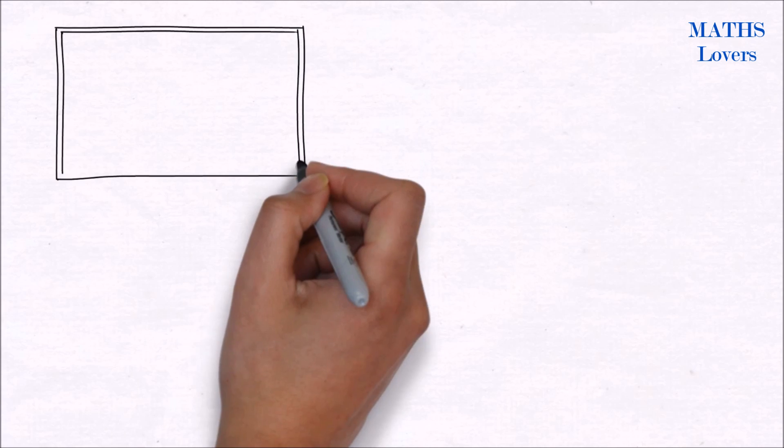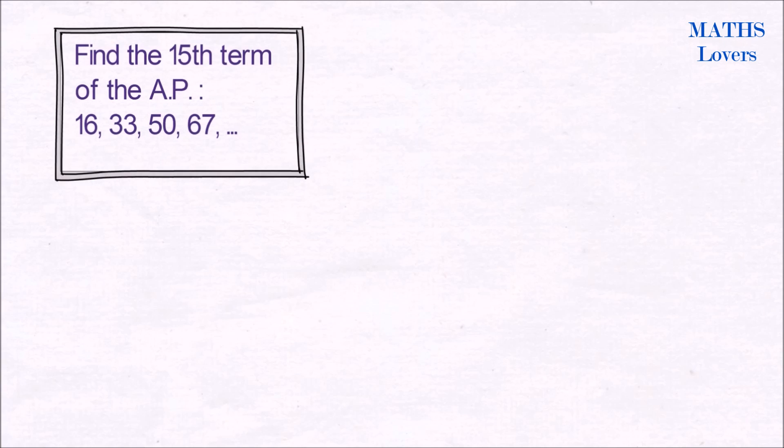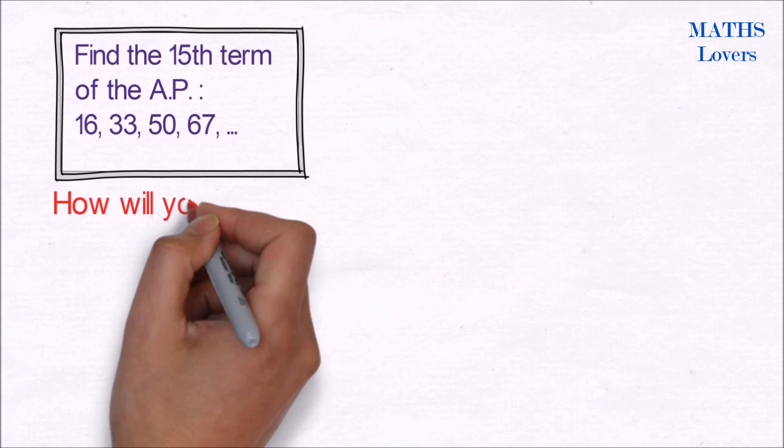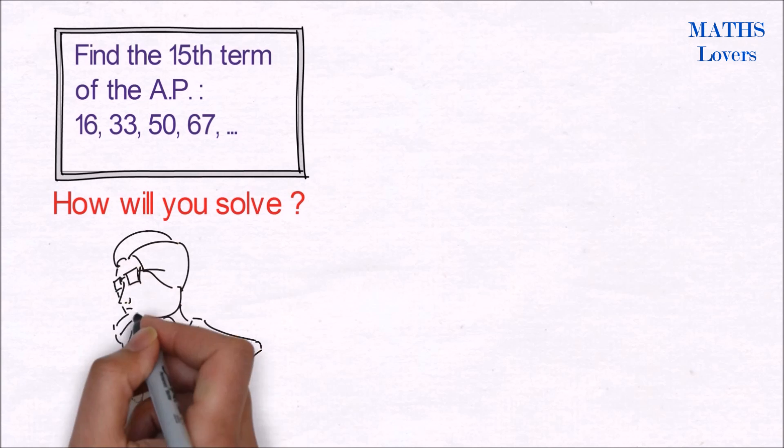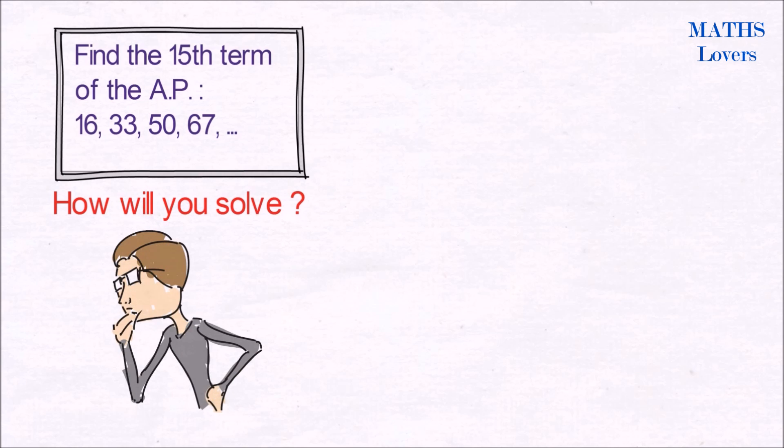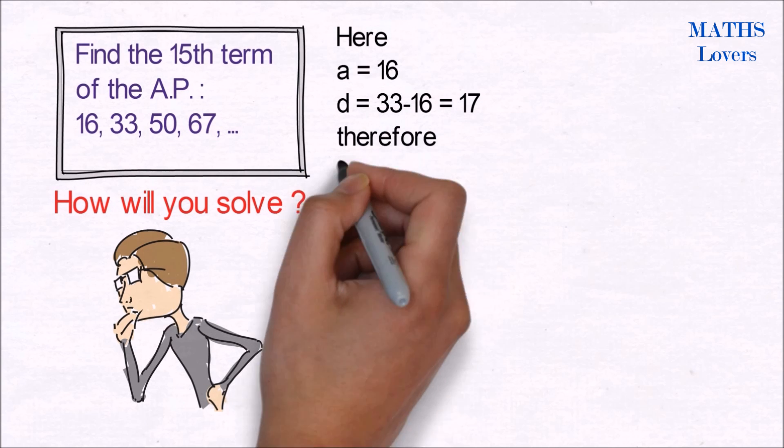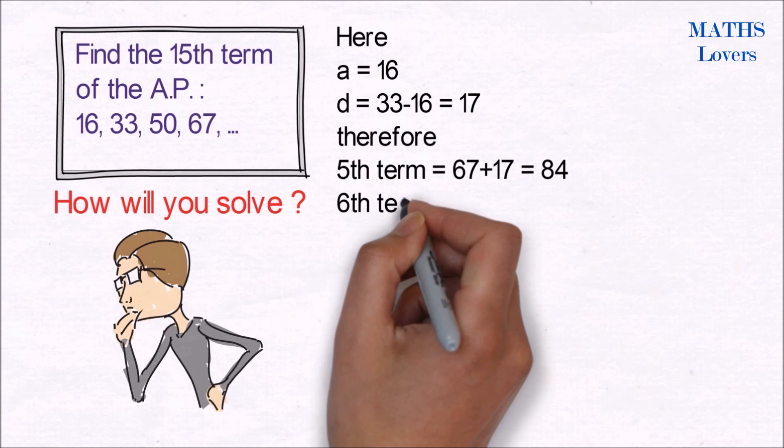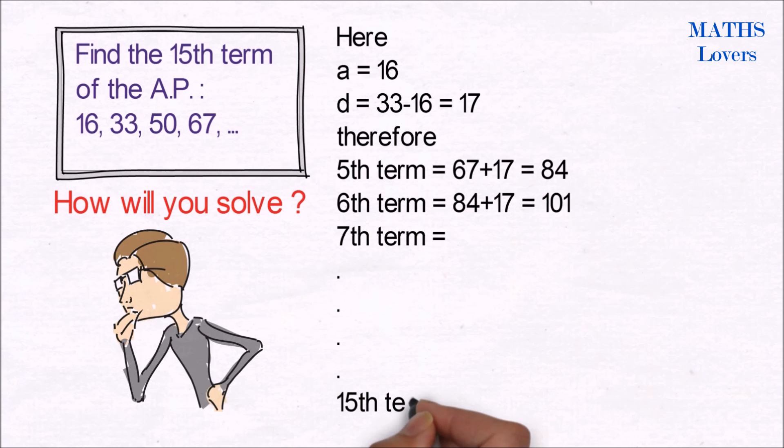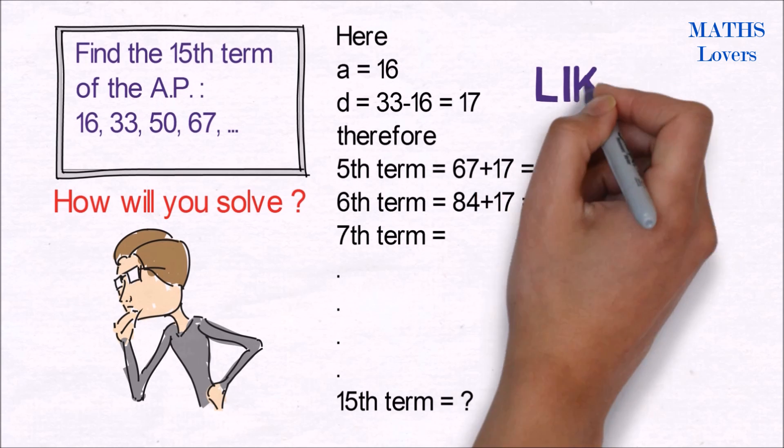Now let's proceed to a question. We want to find out the 15th term of AP: 16, 33, 50, 66. How will you solve? If we go through the basic method, we know that first term a equals 16, difference d equals 17. Therefore, the 5th term will be 4th term plus common difference, which equals 84, and the 6th term will be 104 like this.